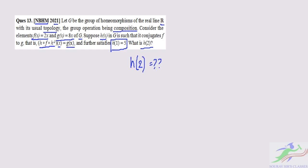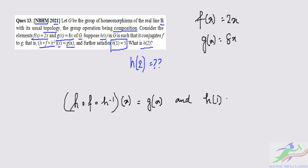It is a pretty simple example. So f(x)=2x and g(x)=8x. Let us take the composite function h∘f∘h⁻¹(x)=g(x) and h(1)=5. We can also say that h⁻¹(5)=1 due to the homeomorphism property.